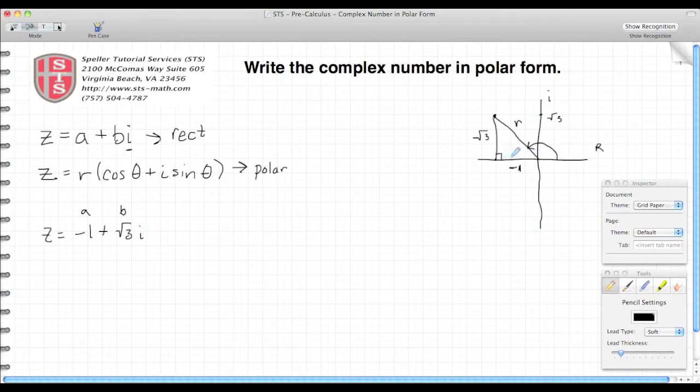If we have a right triangle and we have two sides, we know that we can use the Pythagorean theorem to figure out what the third side is. So we have r squared equals negative 1 squared plus root 3 squared. Well, negative 1 squared is 1 and root 3 squared is 3, and 3 plus 1 evaluates to 4, so we have r squared equals 4. When we take the square root of both sides, we're left with r equals 2.